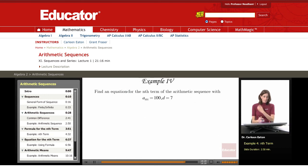Find an equation for the nth term of the arithmetic sequence with a sub 101 equals 100 and a common difference of 7.